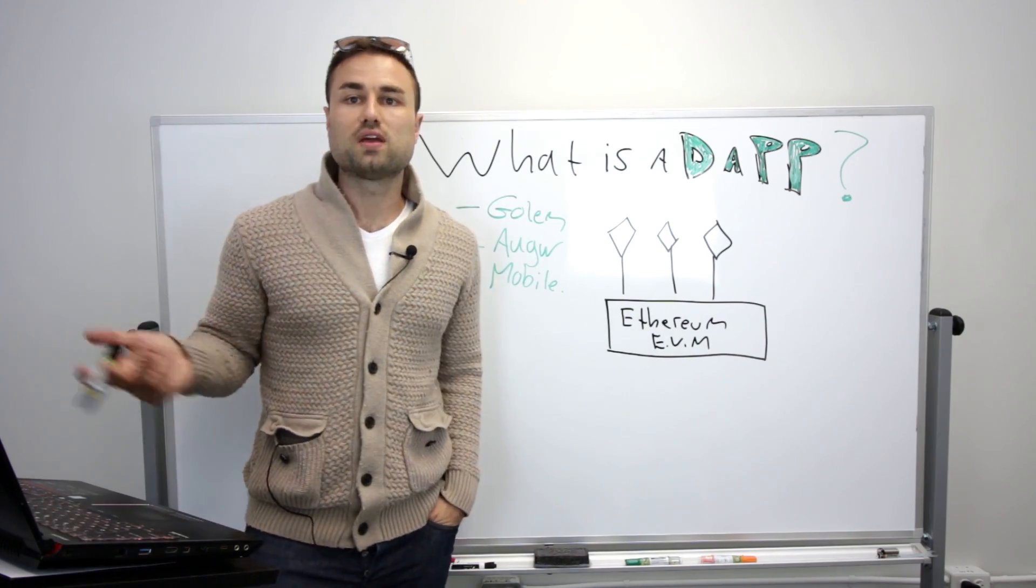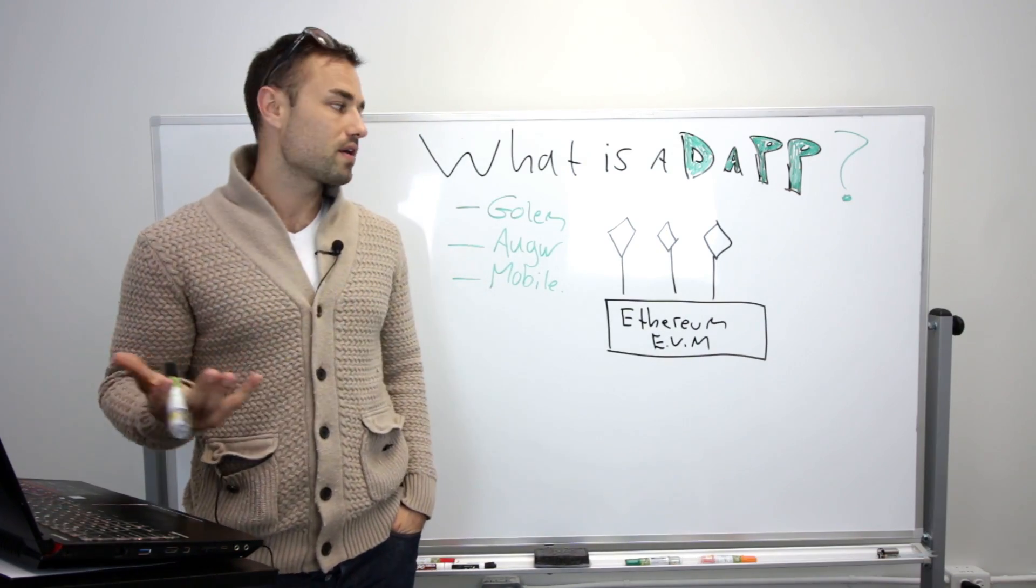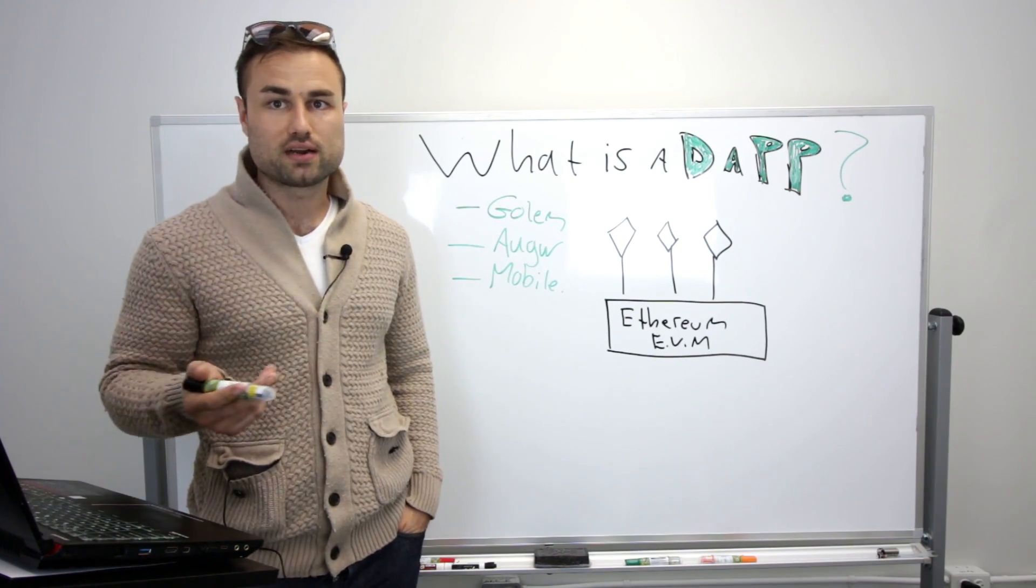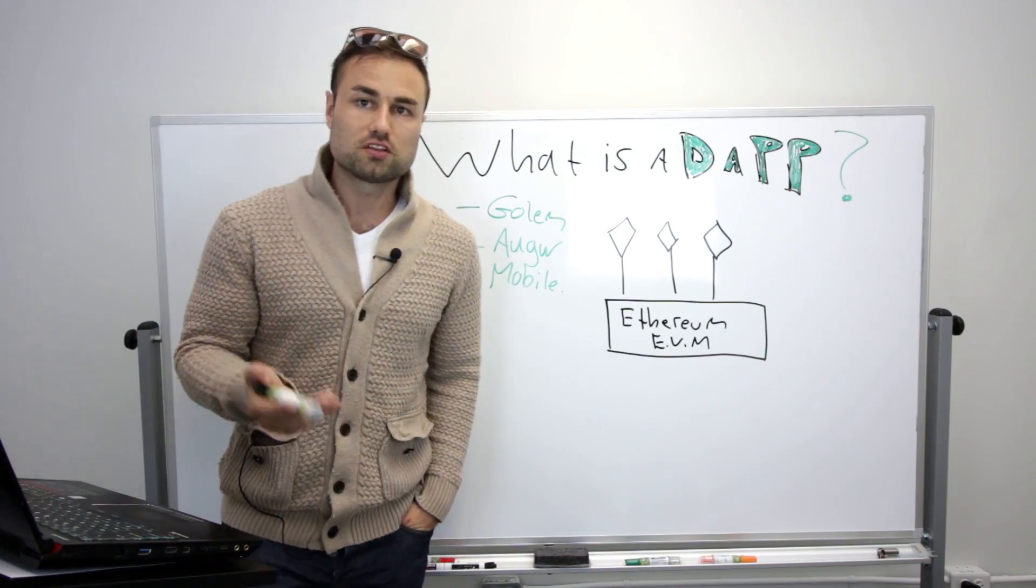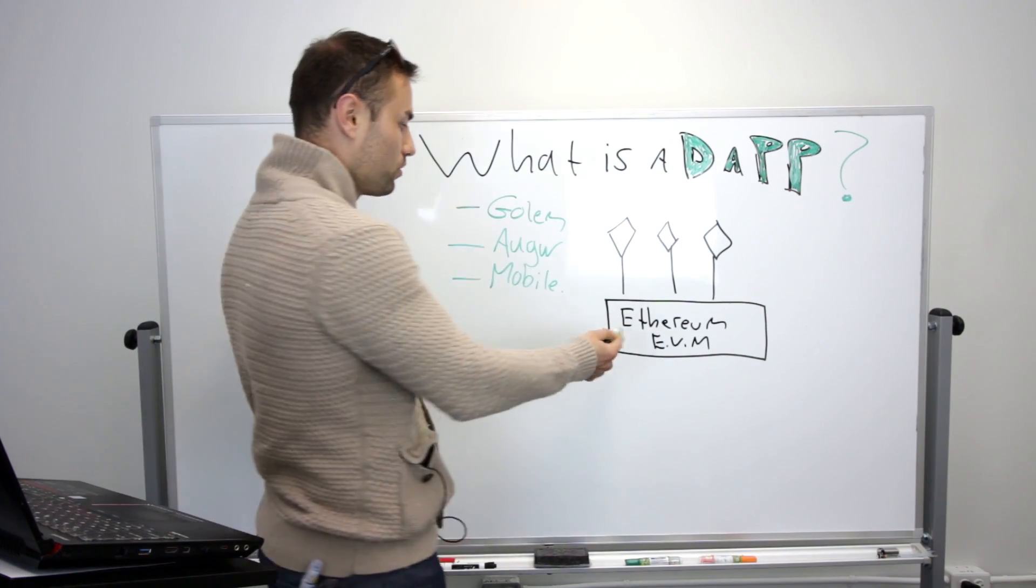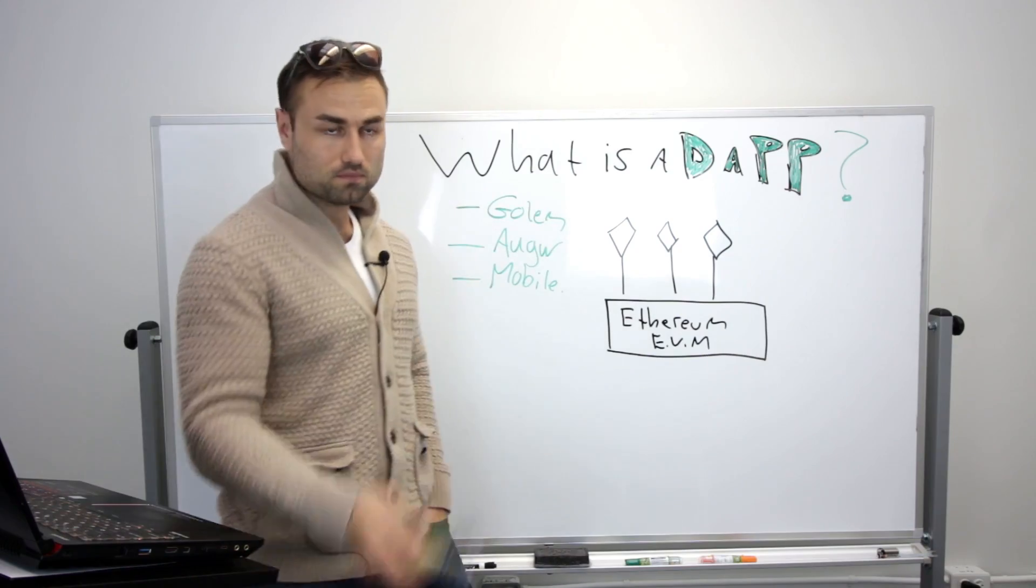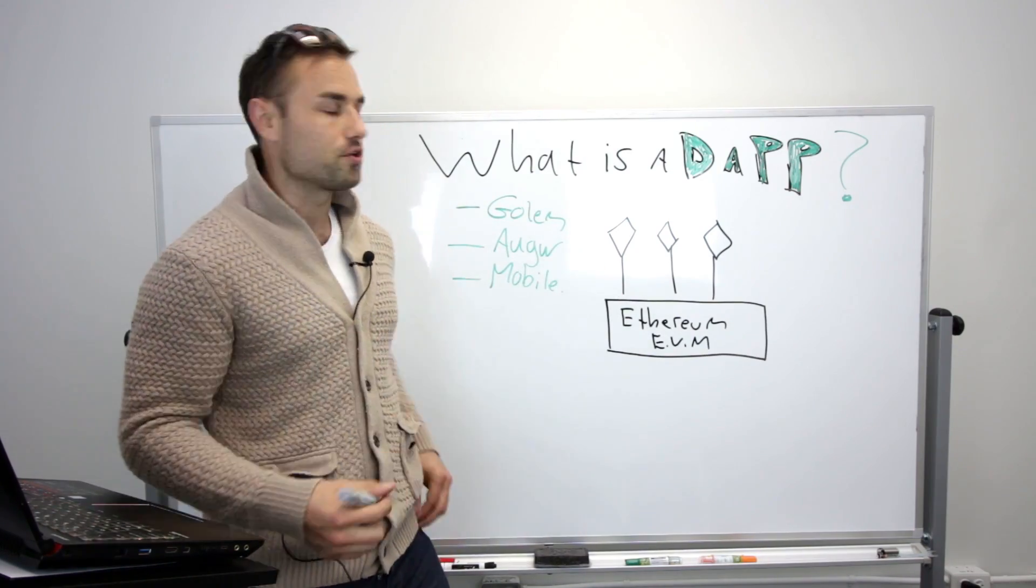You're familiar with the two big blockchain platforms, Bitcoin and Ethereum. Well, I would say 99.9999% of the dApps right now being created are built on Ethereum. So this is how it works. You have Ethereum, which is the blockchain platform, and you have something called the Ethereum Virtual Machine, which is the platform people use.